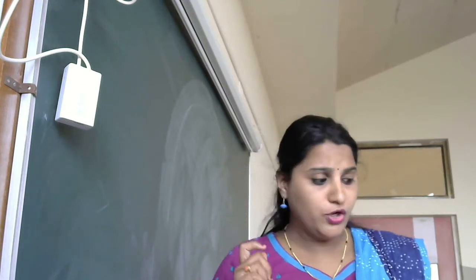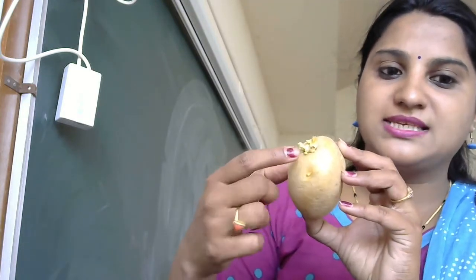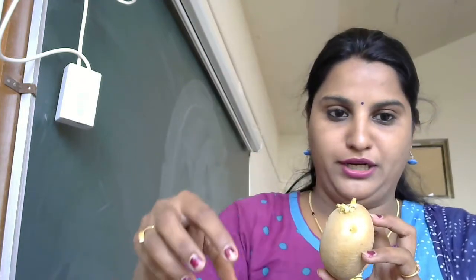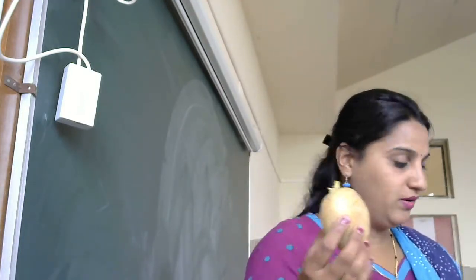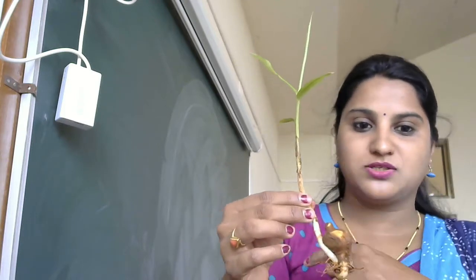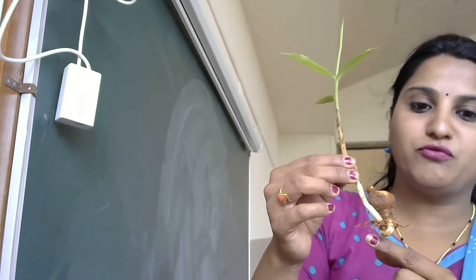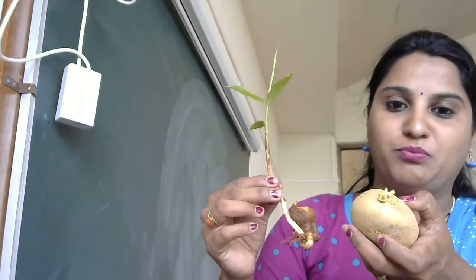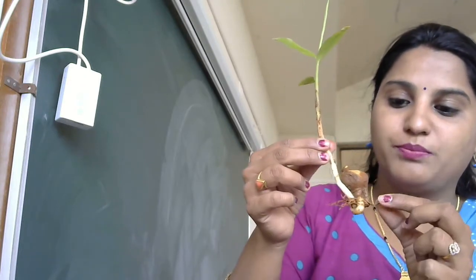If you want to grow a potato plant, I have brought a potato here. You can see this — this is the eye of the potato. If you want a potato plant, what you can do is cut it here from the eye and put it into the soil, and this will grow into a plant. I have also brought ginger from our school garden — when ginger starts growing, these types of roots come out, same as with potato.